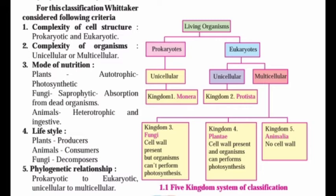Among multicellular eukaryotes, three kingdoms exist: Kingdom Fungi (third), Kingdom Plantae (fourth), and Kingdom Animalia (fifth). Fungi have a cell wall but cannot perform photosynthesis. Kingdom Plantae has a cell wall and organisms can perform photosynthesis, meaning plants can make their own food. These organisms capture sunlight and available materials to prepare their own food.